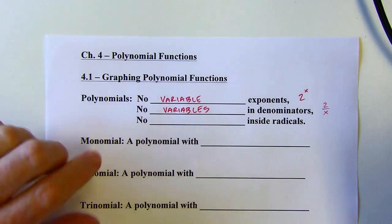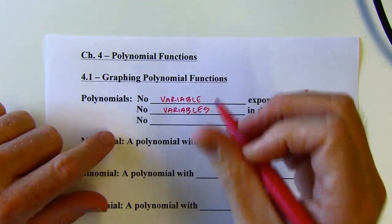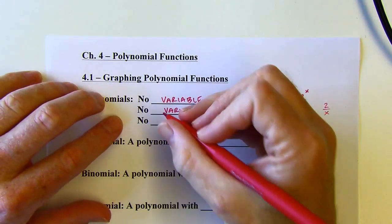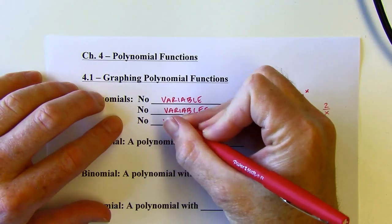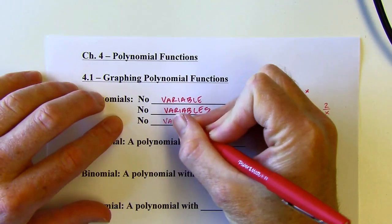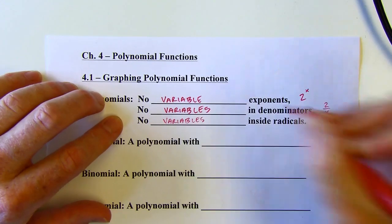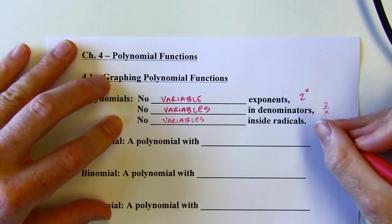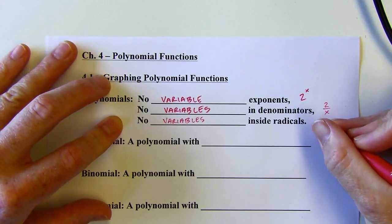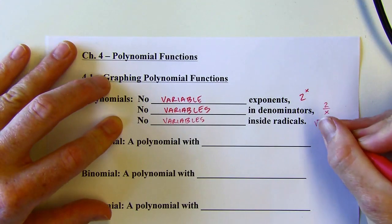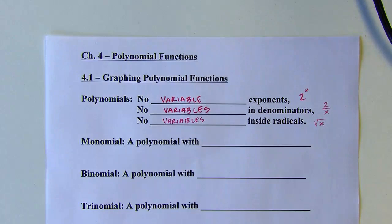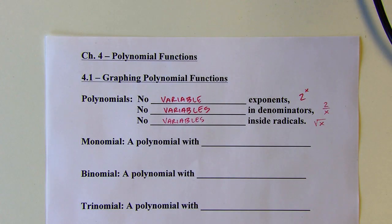And also no variables inside of radicals. There are some different rules about places that variables can't be. The square root of x also doesn't count as a polynomial, at least not in that form.